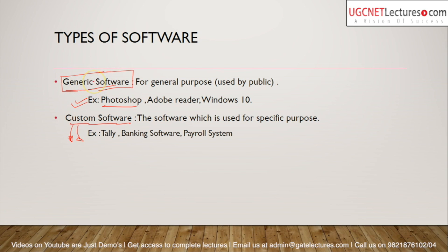In generic software, there is no user involvement in the development phase — only at the time of testing. One organization develops the software, releases it for beta testing, the public gives feedback, and then the company improves the product. So generic software uses feedback, while custom software uses the defined requirements of the user.